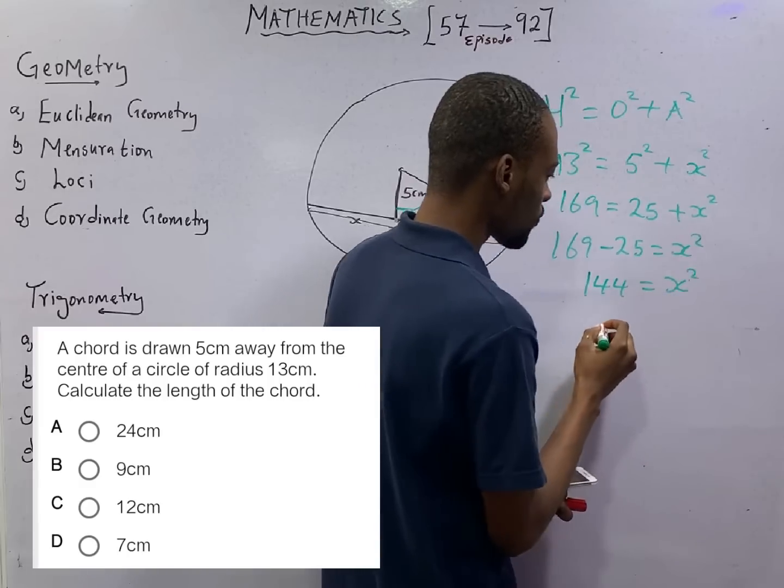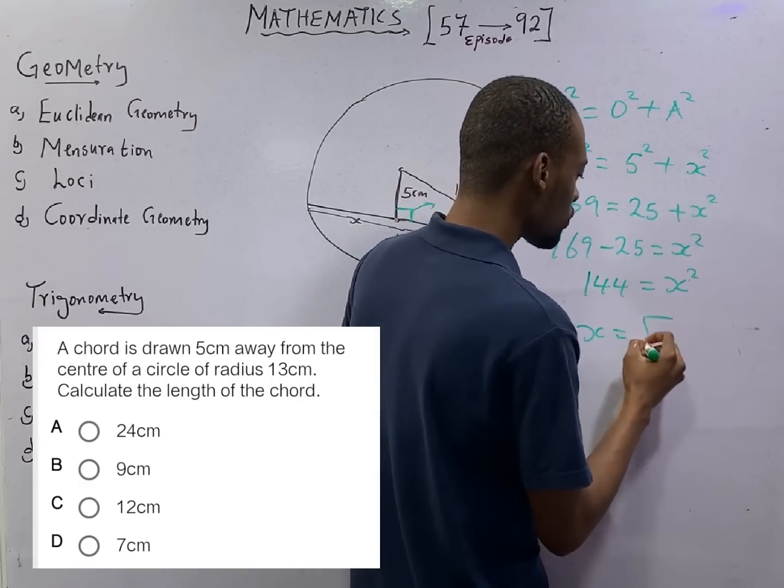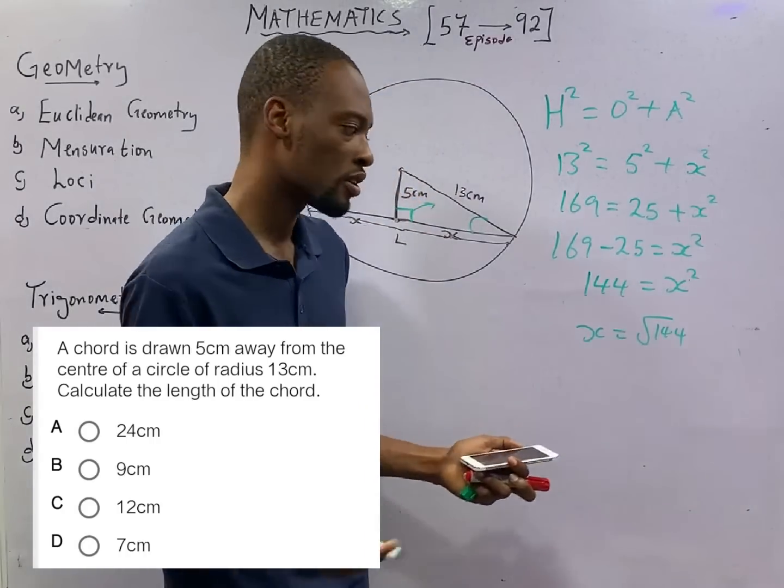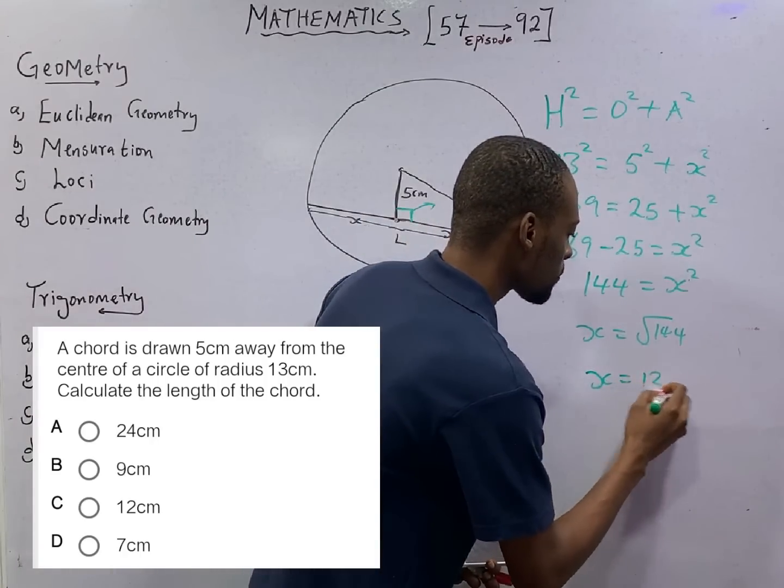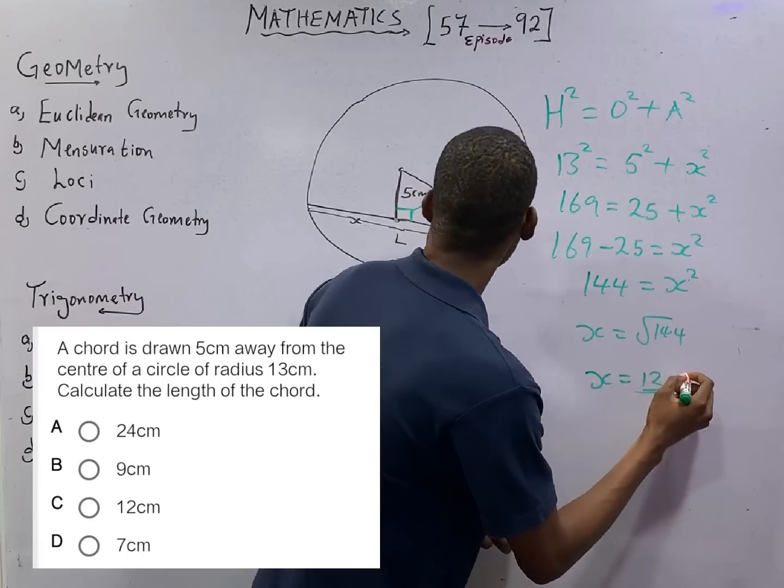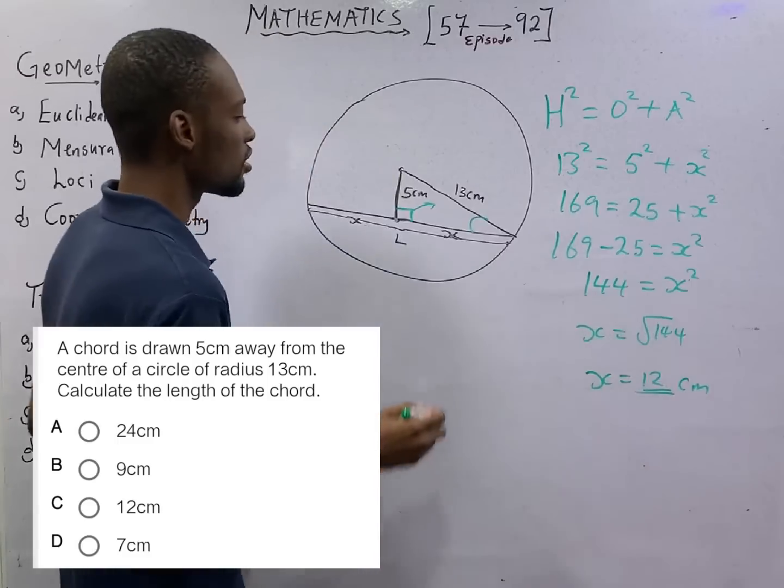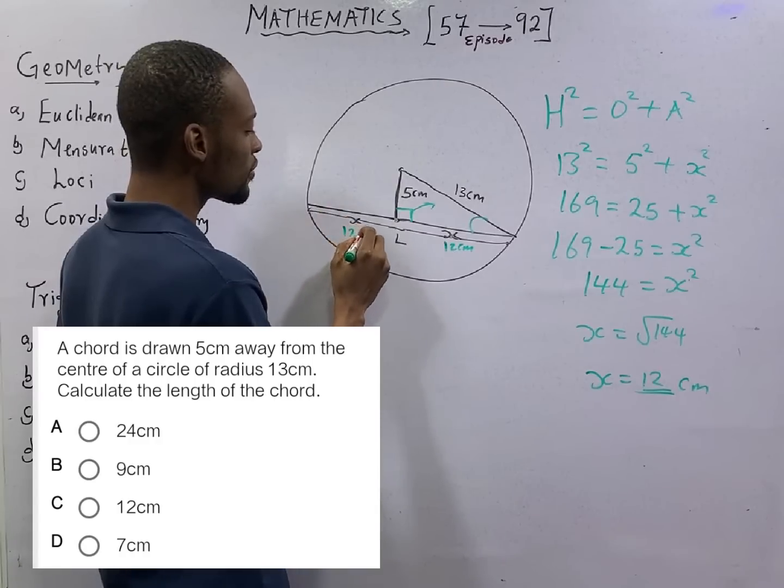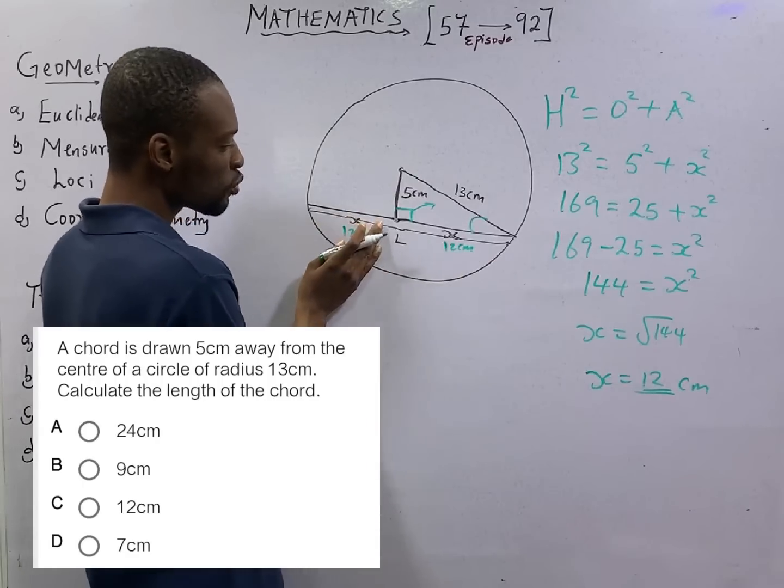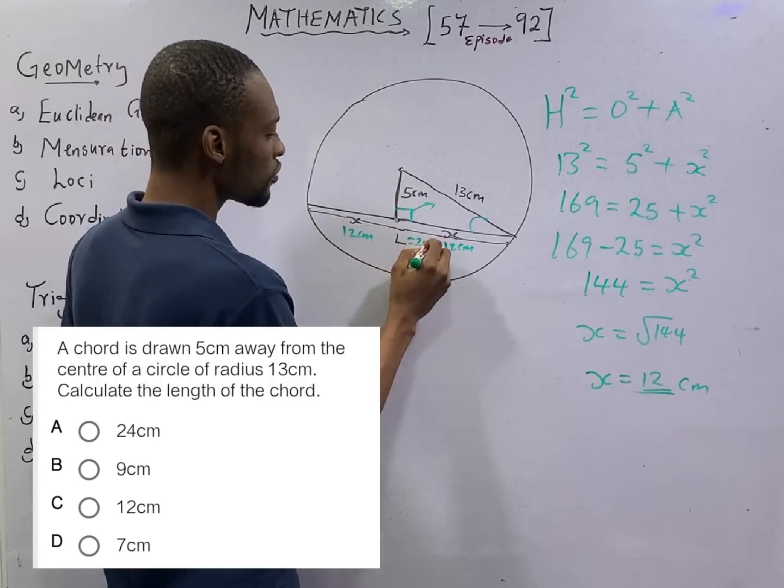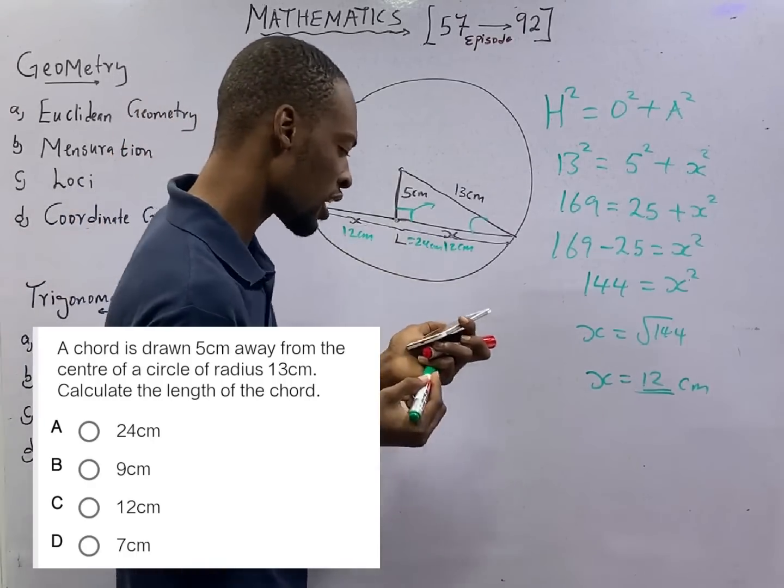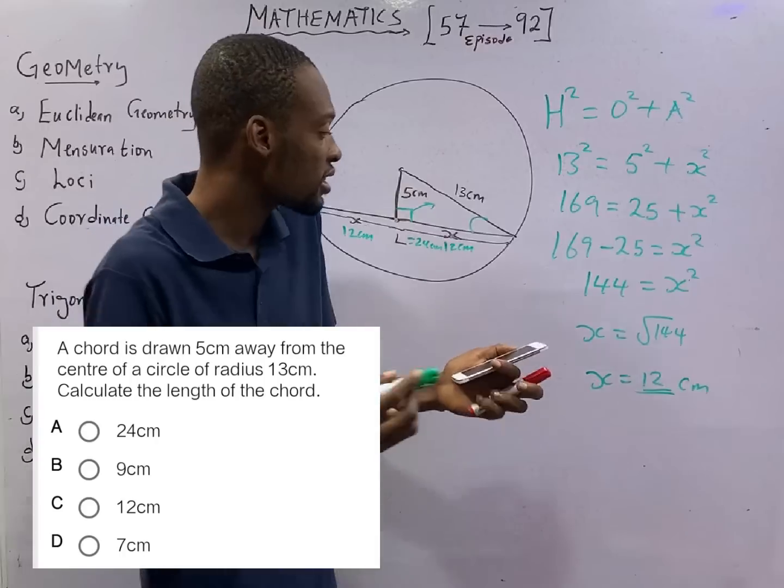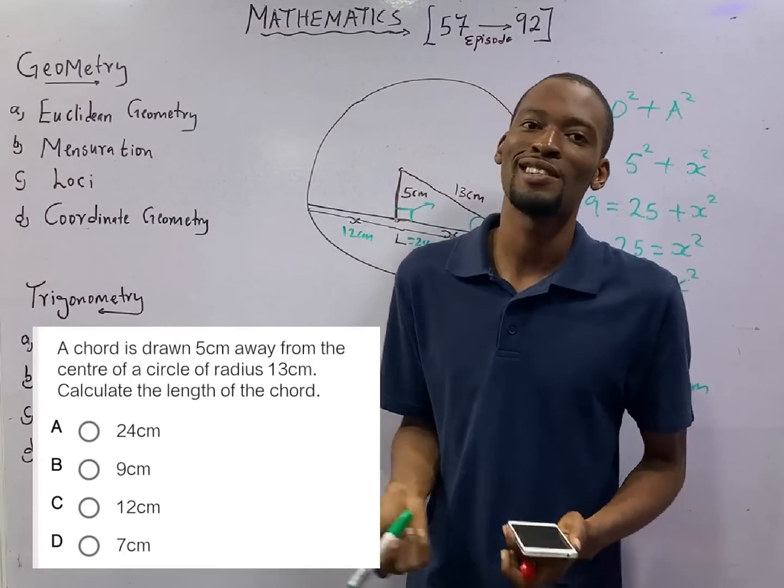So S is the square root of 144. The square root of 144 is 12, because 12 times 12 is 144. So this is 12 cm. If here is 12 cm, this other part is also 12 cm. So the length of the chord is 12 plus 12, that is 24 cm. So 24 cm is the correct answer. Yes, that is the correct option.